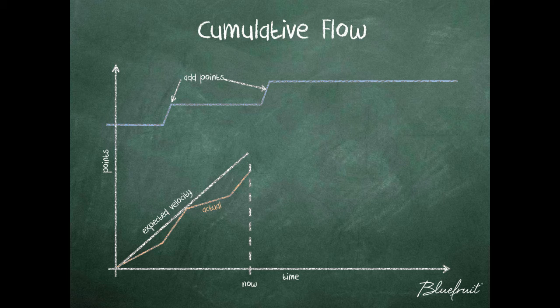At the start of the project, we have an expected velocity. This is the rate at which we expect to work through the points. This will be based on the number of engineers working on the project, how experienced they are, the nature of the work they're doing, the quality of the tools, quality of documentation and so on. All these things feed into the expected velocity.